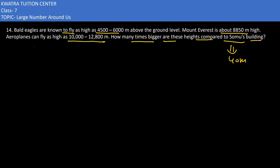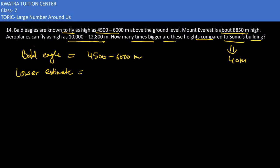Let's find out how many times bigger these heights are. For the bald eagle's lower estimate, we take 4,500 and divide it by 40, which is the height of the Somos building. Cancelling a zero from each, we get 450 divided by 4, which gives us 112.5.